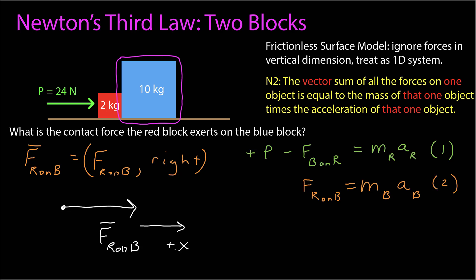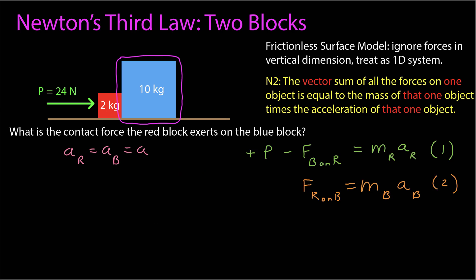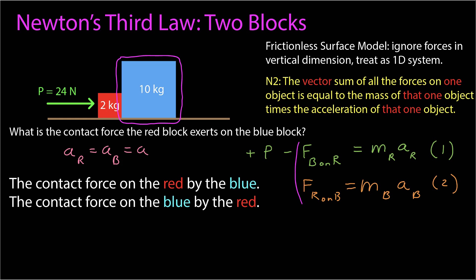I'll find a relationship between the accelerations. Since I'm pushing the red block into the blue block, the entire system moves to the right together, meaning the displacement, velocity, and acceleration of both objects are the same. So the acceleration of red equals the acceleration of blue — I'll call it A, the acceleration of the whole system. This is where Newton's third law comes in: the contact force on the red block by the blue, and the contact force on the blue block by the red, are a Newton's third law force pair, so their magnitudes are equal. I'll call that magnitude F. Now I have four relationships and four unknowns, so I can solve.